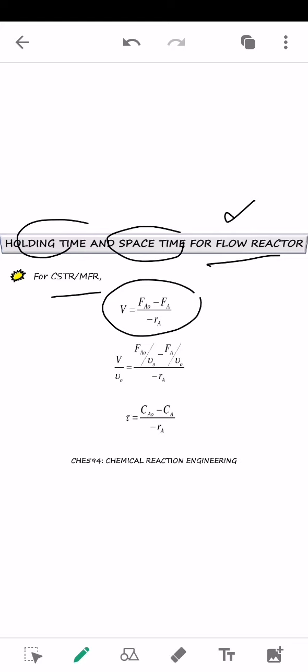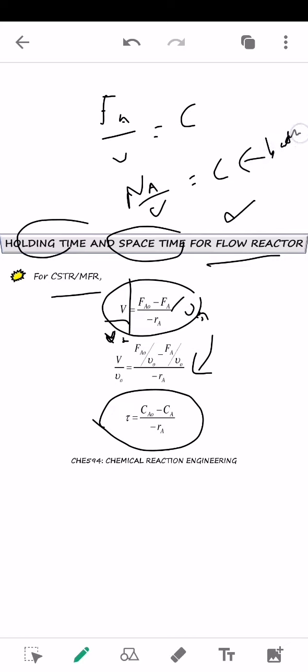So, if we divide both sides, both sides we divide by volumetric, so ni pun kita divide by volumetric, which is shown in this equation. So, you akan dapat tau. Kemudian FA0 over volumetric is equals to concentration and flow rate divided by volumetric. Flow rate divided by volumetric is equals to concentration because this is the same as number of moles divided by volume.